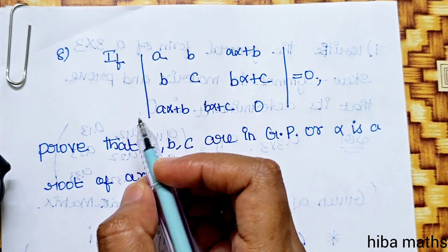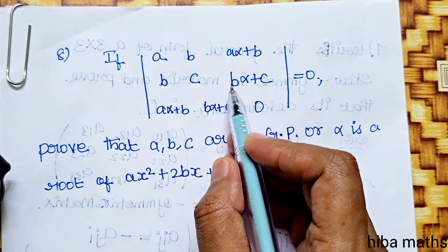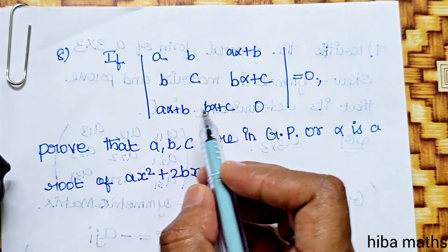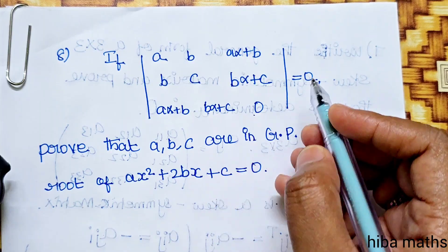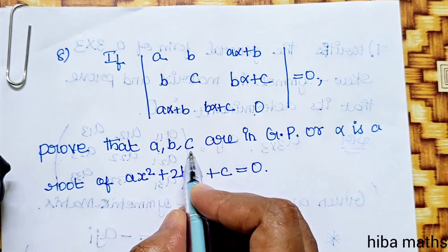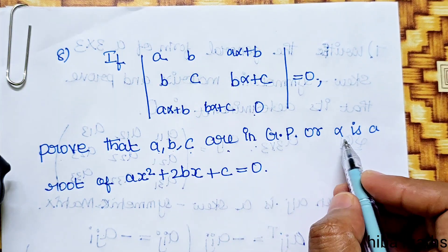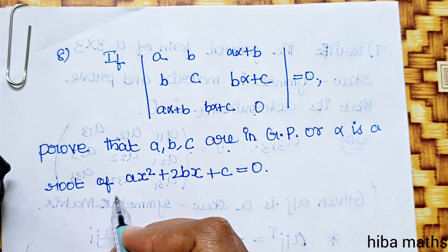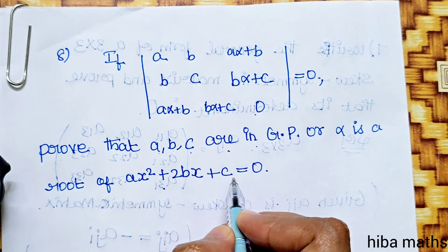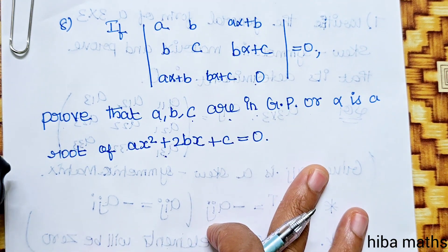8th question: If A, B, (Aα+B), B, C, (Bα+C), (Aα+B), (Bα+C), 0 — the determinant formed by these entries is equal to 0, prove that A, B, C are in GP or α is a root of Ax²+2Bx+C=0.